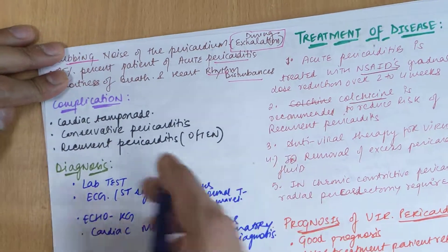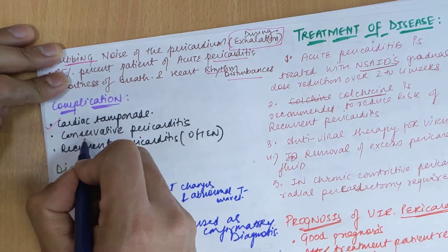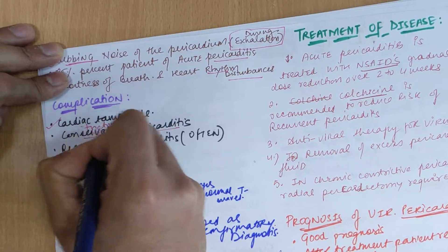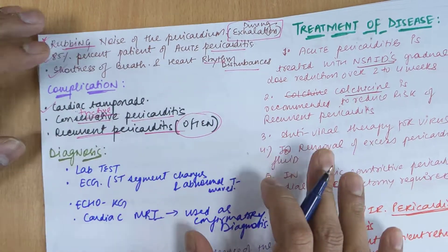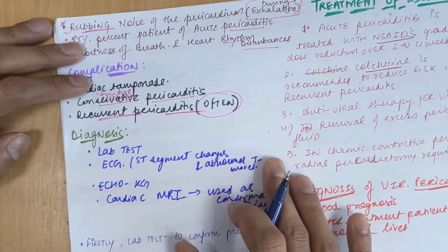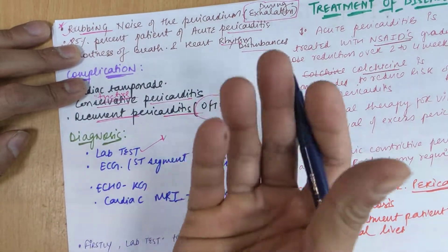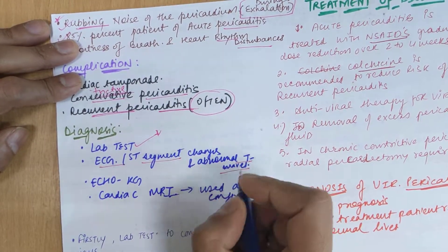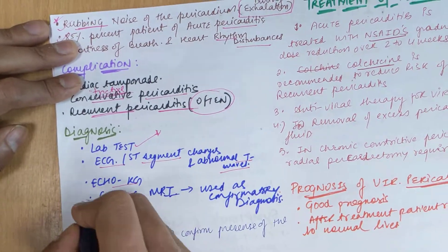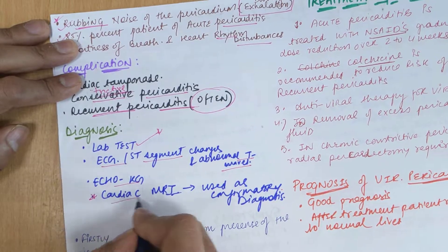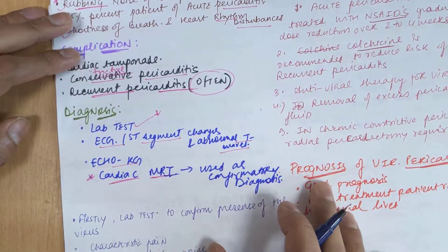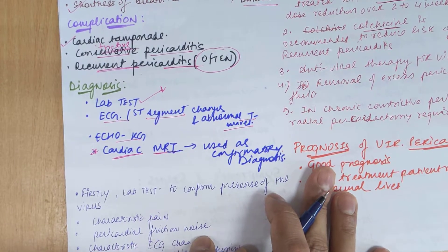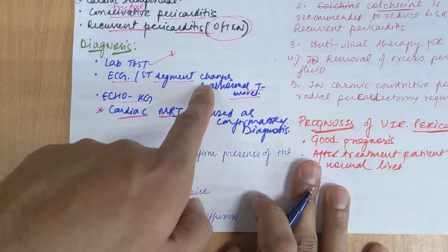Complications include cardiac tamponade and constrictive pericarditis, with recurrent pericarditis also commonly seen. For diagnosis, we perform lab tests to check for viral infection, ECG to observe ST segment changes and abnormal T waves, echocardiography, and the most confirmatory diagnosis is cardiac MRI. Pericardial friction noise and characteristic ECG changes are key clinical findings.